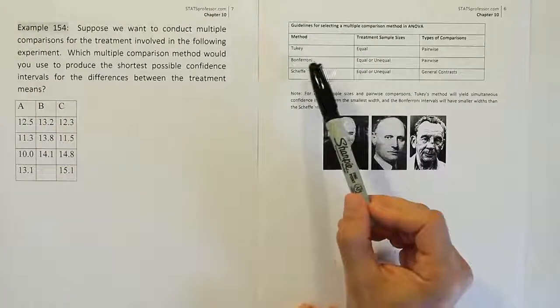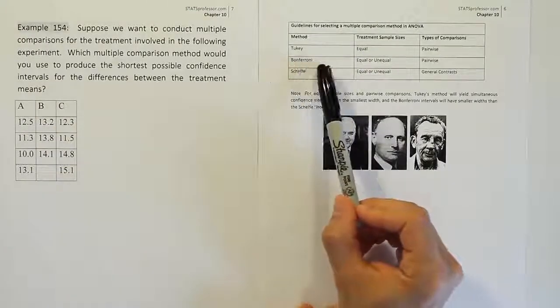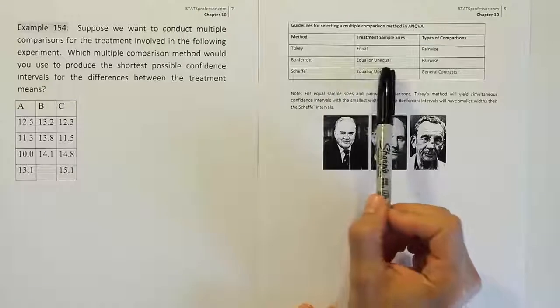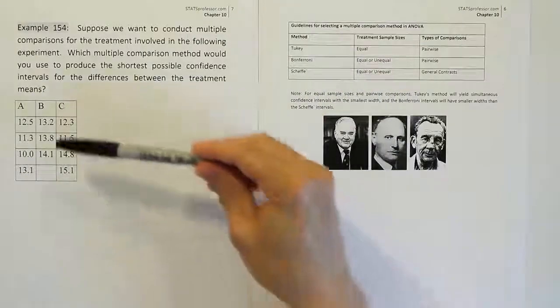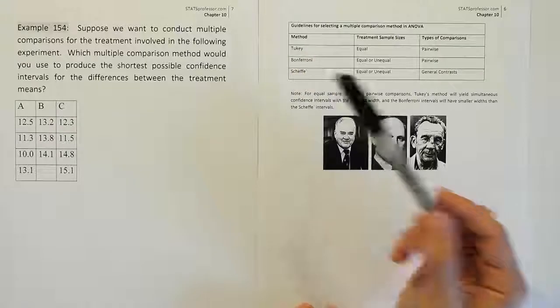But since it's not a balanced design, we'll have to use the next one on the list, and that's Bonferroni. And that will work with equal or unequal sample sizes. So that's okay here that it's unequal, and so we'll use Bonferroni as our choice.